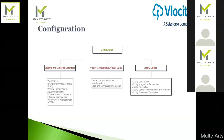In Velocity training, they typically start with platform developer essentials, then move to Velocity CPQ — about one week of training. After that, CLM and order management are separate trainings based on personal interest. As a consultant or business analyst, you should at least have an overview of all topics. As a developer, you need platform essentials and a background in CPQ.